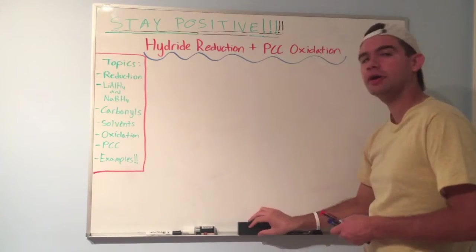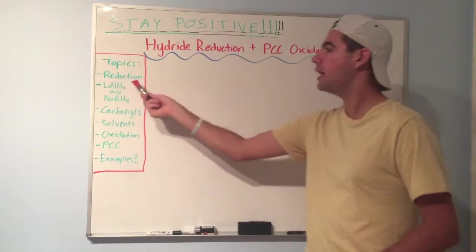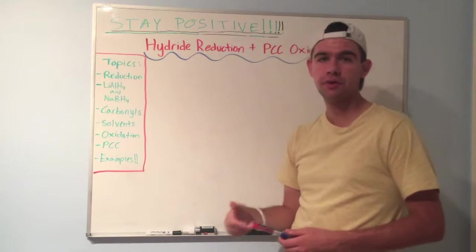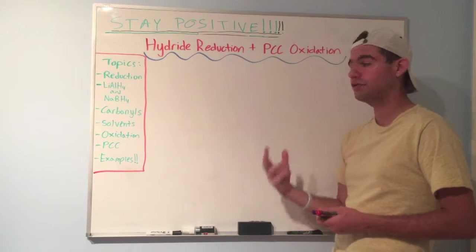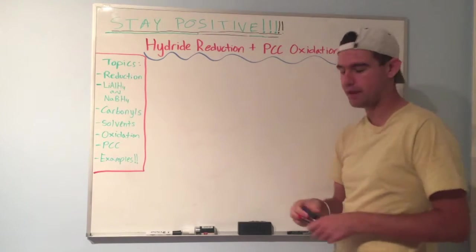So in OCHEM, you're going to encounter two primary sources of hydride: LIALH4 or lithium aluminum hydride, and NABH4, sodium borohydride. They are different. They require different solvents and also have different mechanisms. So let's tackle one at a time.